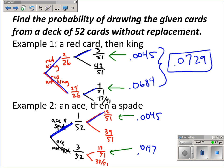Okay. And then I add those two together because it's an or situation. And I get 0.09. I'm sorry. 0.0192 as the probability of getting an ace and then a spade.